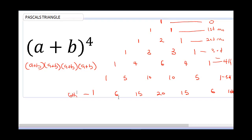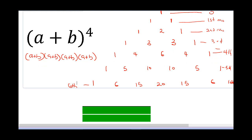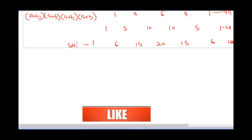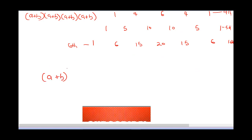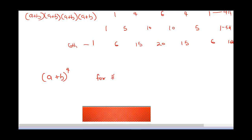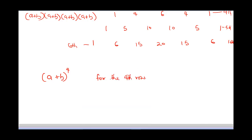Having noted that, we've been asked to expand (a + b) raised to the power 4. For the fourth row, we have: 1, 4, 6, 4, 1. These are the coefficients we will use.